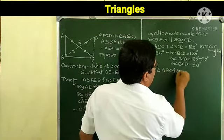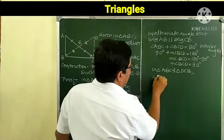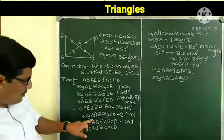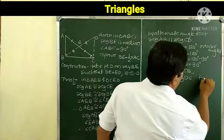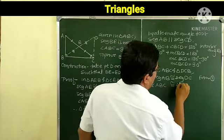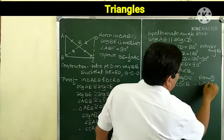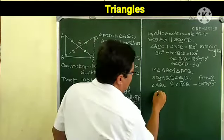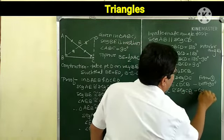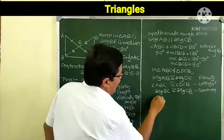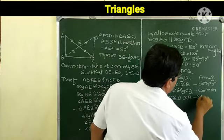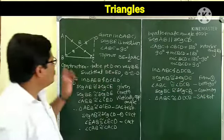In triangle ABC and triangle DCB: segment AB is congruent to segment DC — from step 1. Angle ABC is congruent to angle DCB — both are 90 degrees. Segment BC is congruent to segment CB — common side. Therefore triangle ABC is congruent to triangle DCB by the SAS test.